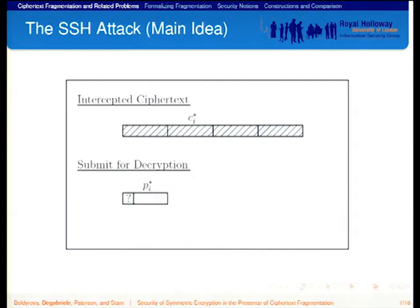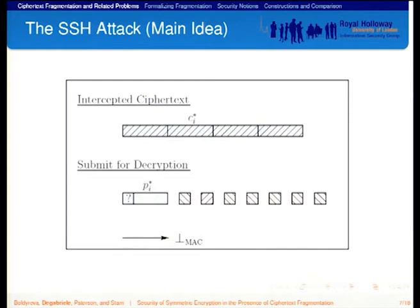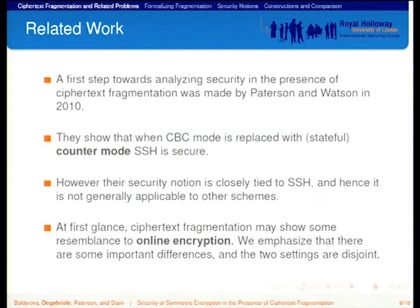The adversary then starts sending a sequence of random ciphertext bytes one by one until it observes a MAC failure error. Once this happens, it knows that the number of ciphertext bytes sent corresponds to the value of the length field. In this way, the number of bytes sent leaks the first 32 bits of the plaintext block. That is the main idea behind the SSH attack.